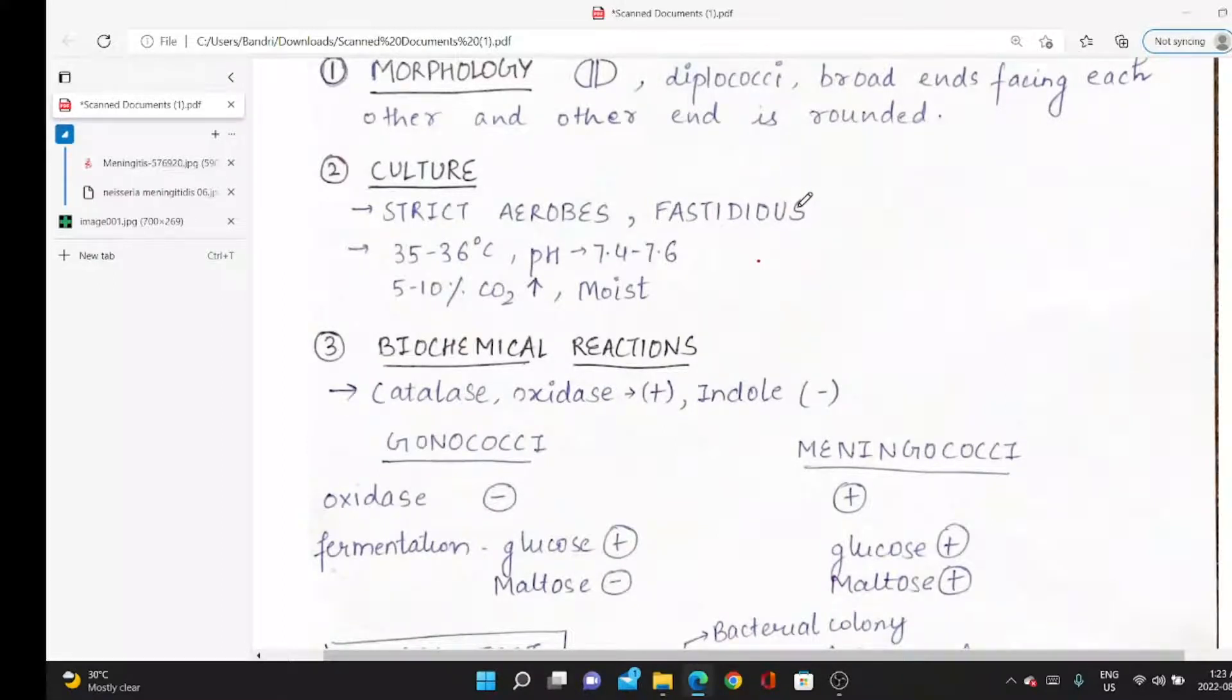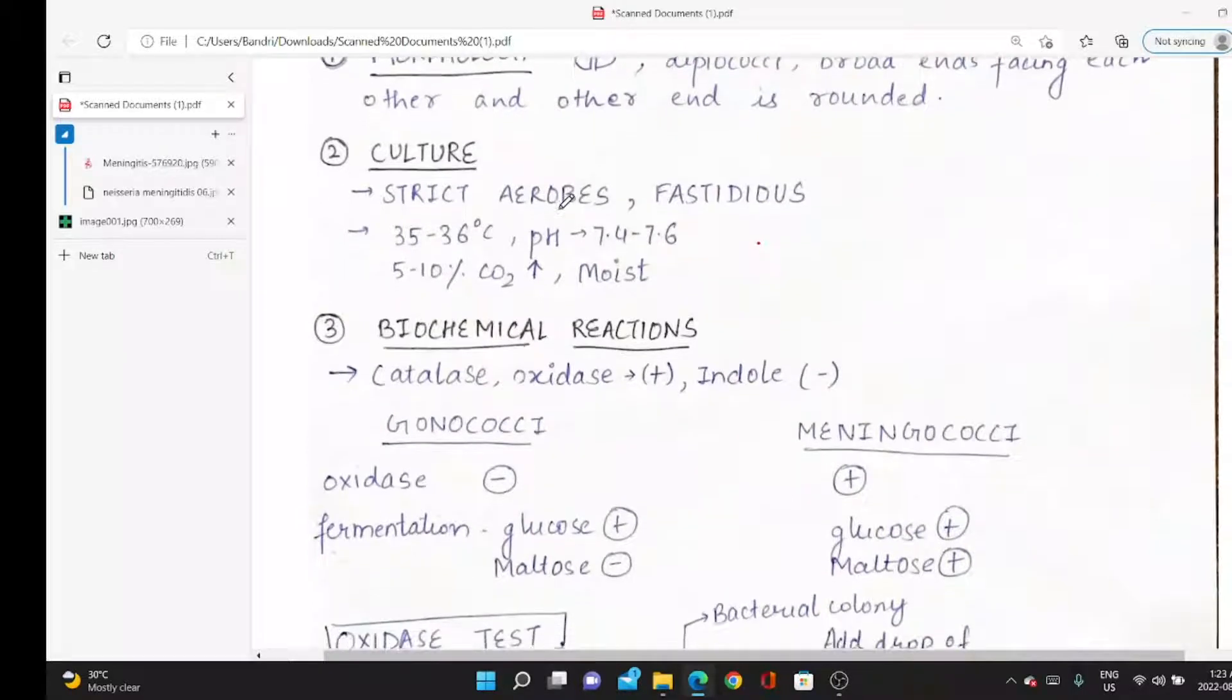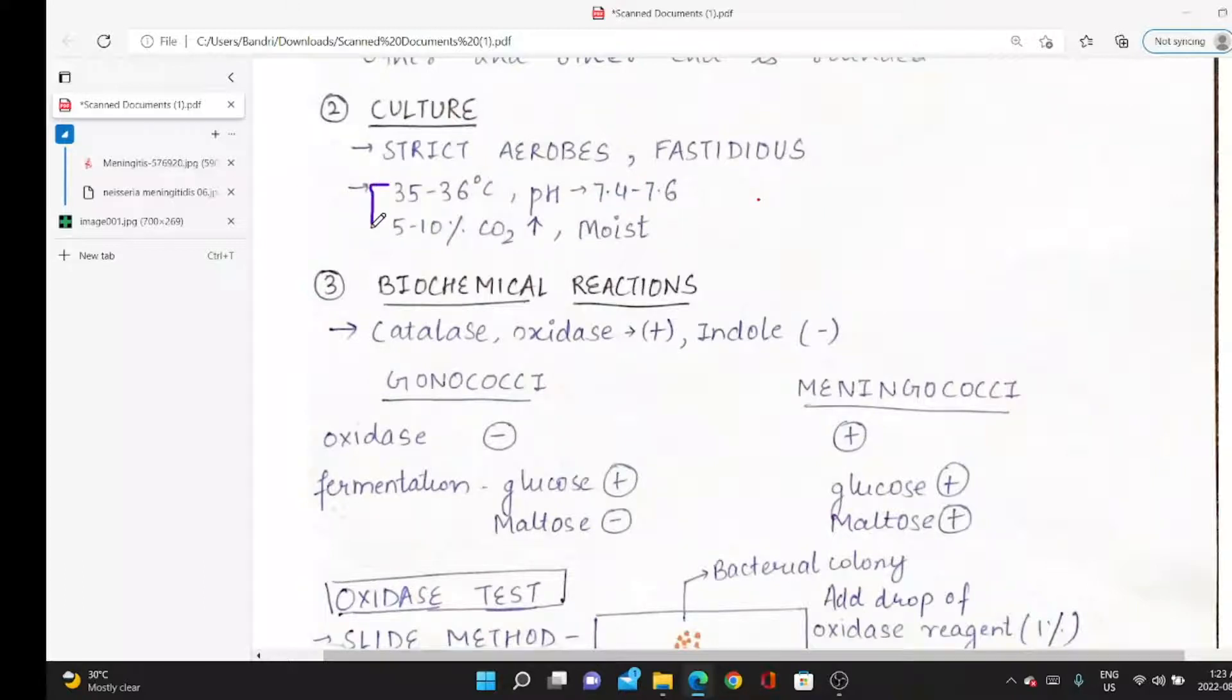It has special requirements; that's why we use those agars. It is fastidious. They are strict aerobes—they need oxygen. Temperature, pH, conditions: 35 to 36 degrees Celsius, pH 7.4 to 7.6, 5 to 10% CO2, and moist environment for growth.